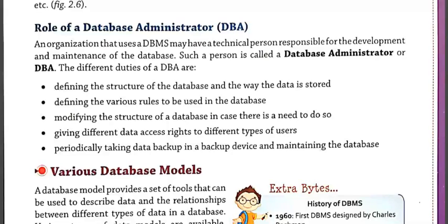The DBA also provides the access rules for the database, meaning which person has the authority to access which kind of data. For example, if a database contains the information of teachers as well as students, then which data will be accessible by students and which data is accessible by teachers — this is decided by the database administrator only. After the creation and entering of data into the database, it is also the DBA's responsibility to maintain the database and take backups periodically as per the need.